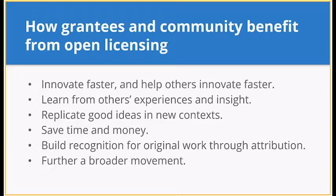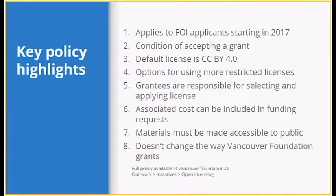We also heard about potential challenges with open licensing, which is why we built a responsive policy that puts licensing in the hands of grantees. The full policy is available at vancouverfoundation.ca under Our Work and Initiatives. The policy applies to Field of Interest applicants starting in 2017 — the first stream to open in 2017 that this applies to is the Environment and Animal Welfare Develop grants. Accepting the policy is a condition of accepting a grant, with check boxes on applications and grant acceptance letters. The default open license we ask grantees to use is CC BY 4.0, the most open license.